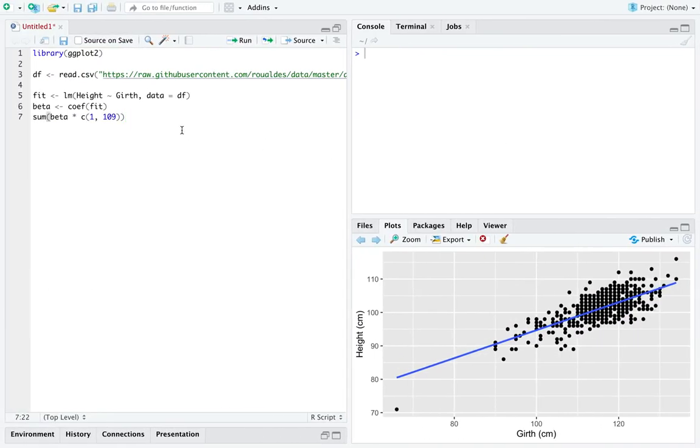I'm going to keep with this same setup that we've seen before, using the donkey's data set with girth as the explanatory variable, height as the response variable. I'm going to load our library ggplot2, the data set, fit our original model, remind you that you can extract the vector of coefficients, which I'm going to call beta, with the function coef on your fitted object.